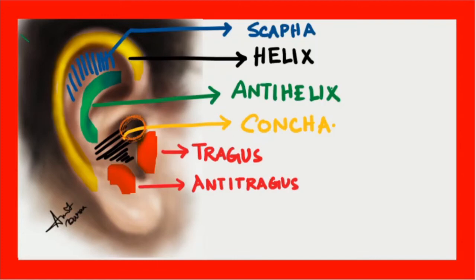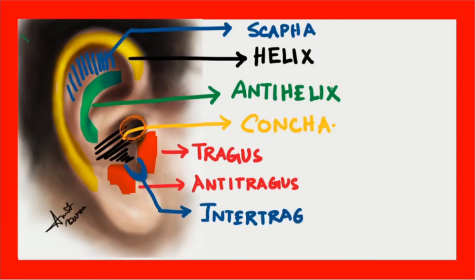Another structure to appreciate here is that between the tragus and anti-tragus, there is a notch-like structure that I have highlighted with a U. This notch-like structure is known as the inter-tragal notch.